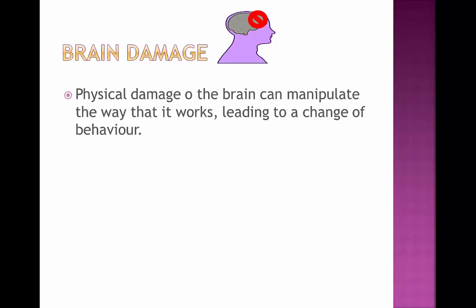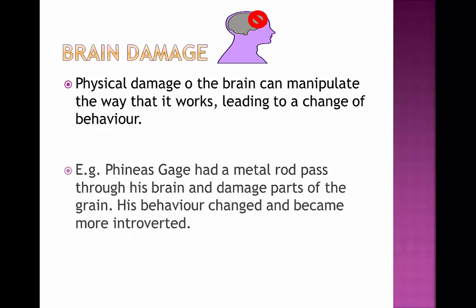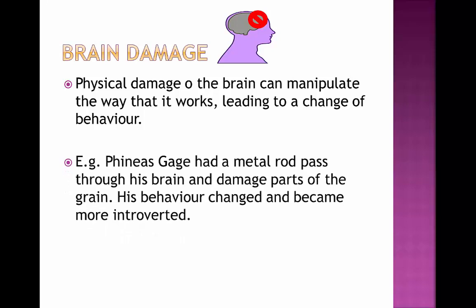Brain damage is the next factor. Physical damage to the brain can manipulate the way that it works, which can then lead to a change in behaviour that becomes abnormal. For example, Phineas Gage was a person who had a metal rod pass through his brain in an accident, damaging parts of his actual brain. His behaviour changed and became more introverted, and as a result he became more abnormal.